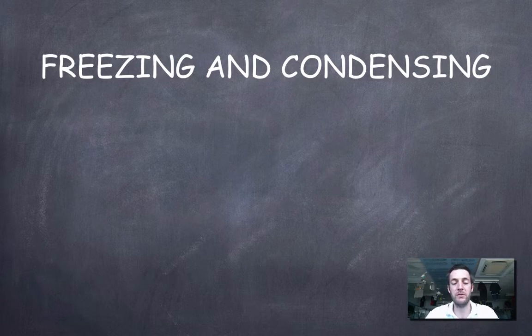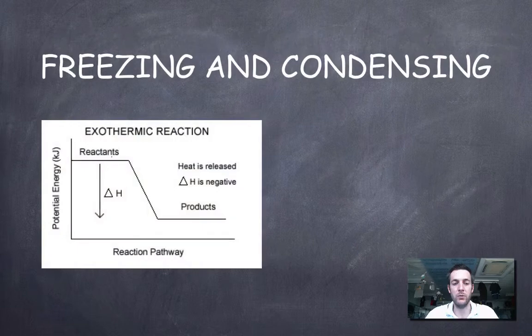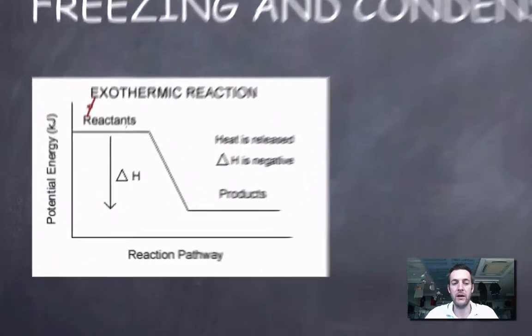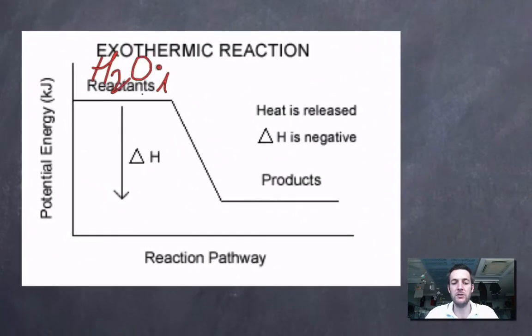As we saw on the previous energy level diagram, the liquid water had a higher enthalpy than the solid water. So if you freeze water, its enthalpy is going to be falling. It's going to be losing enthalpy, and it's going to be converting that into heat, and the heat will escape from the system. This is exothermic because heat is escaping.